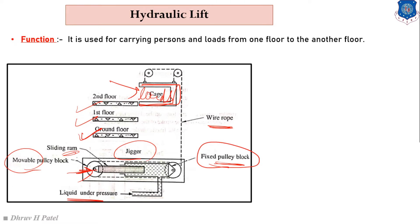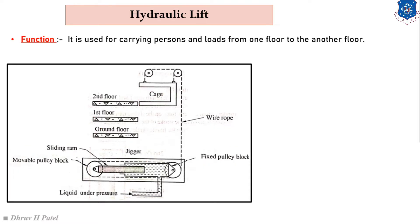Now let us understand the working of the hydraulic lift. Suppose our cage is at the ground floor and we want to go to the second floor. We supply fluid under higher pressure to the piston and cylinder assembly. The fixed pulley is unmovable, but the movable pulley — connected through the sliding ram — will move in the left-hand side direction.